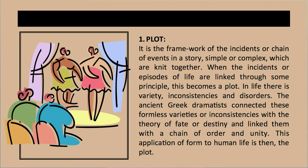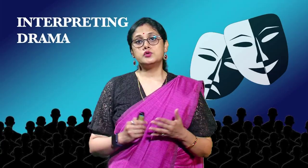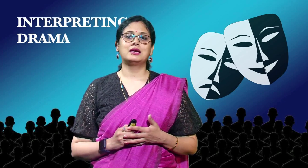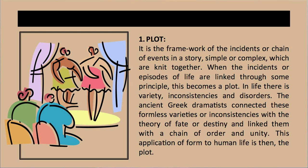The first and most important and unavoidable element on which the narrative or the play is constructed is the plot. It is the framework of the incidents or chain of events in a story, simple or complex, which are knit together. When the incidents or episodes of life are linked through some principle, this becomes a plot. To achieve a certain objective, the playwright binds these events of human life with a principle. In life, there is variety, inconsistencies and disorders. The ancient Greek dramatists connected these formless varieties or inconsistencies with the theory of fate or destiny and linked them with a chain of order and unity. This application of form to human life is then the plot.